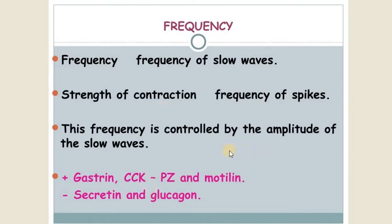It is controlled by gastrin, cholecystokinin, pancreozymin, and motilin which have a positive effect, and the negative effect is by secretin and glucagon.